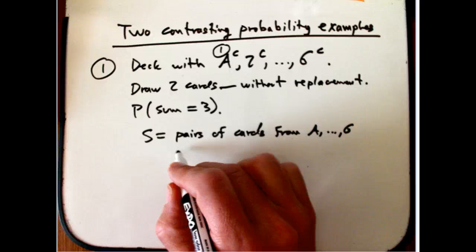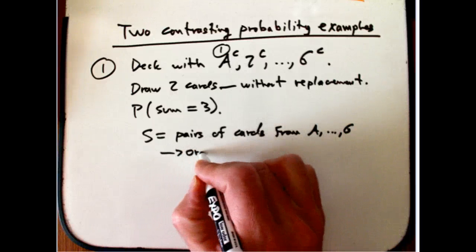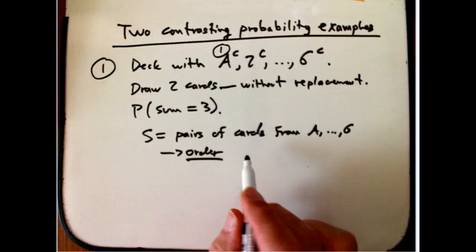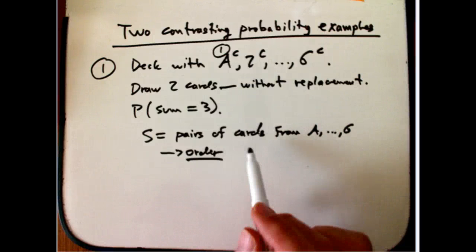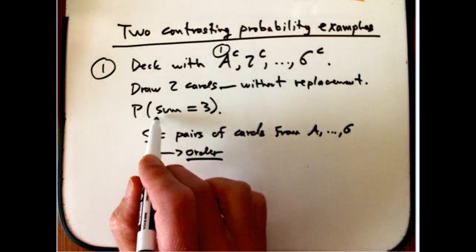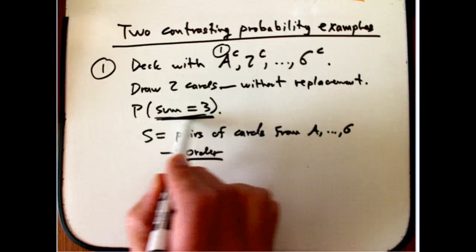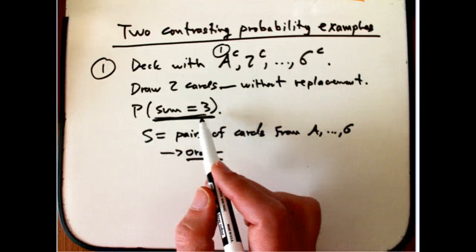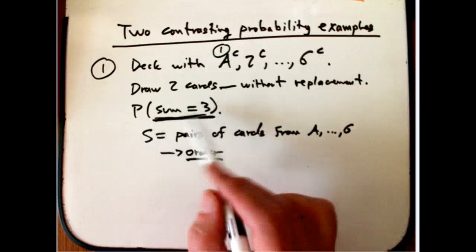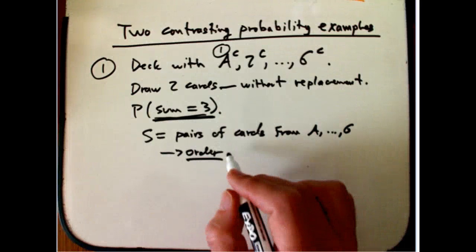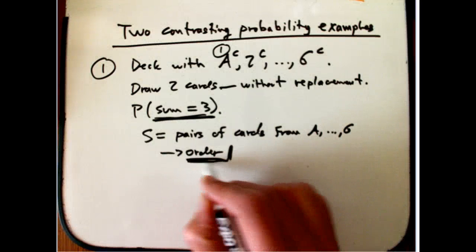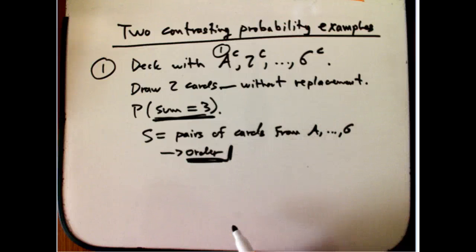And so version A, I'm going to count them with order. So ordered pair of cards. I'm going to pay attention to which one is the first, which one is the second. Now, the rules of the problem of the event that I'm looking at doesn't care about order, because this is an ace and a two, or a two and an ace. But the safe bet is to count with order.